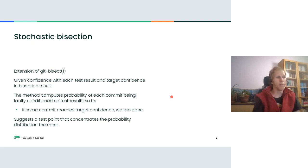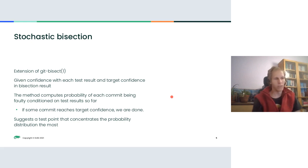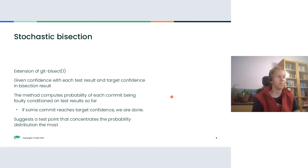This is what I've implemented — an extension to git bisect with some additional options. When starting a bisection, you specify the confidence level you want to reach. Because once you enter the field of probability, you can never be sure of anything — all you can guarantee is, say, with 99% probability this commit is the one introducing the failure. You can never achieve 100% confidence. The higher the confidence you want, the more tests it will take.